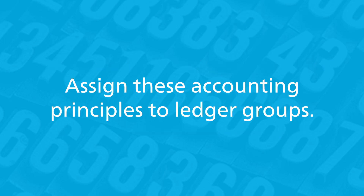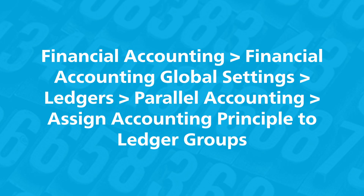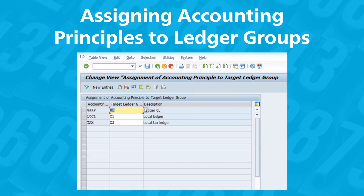In the next step, you'll assign these accounting principles to ledger groups. A ledger group normally contains one ledger, but you can have multiple ledgers in one ledger group. The assignment of accounting principles is at the ledger group level. Follow this menu path where you can assign accounting principles to ledger groups, as shown in the final figure. This step is where the link between the ledger and the accounting principle, shown earlier, comes from.